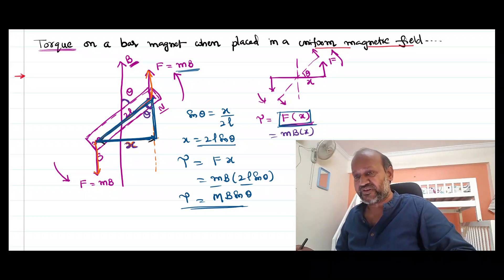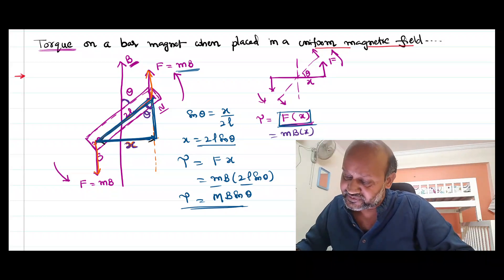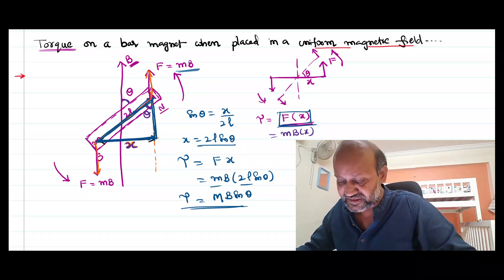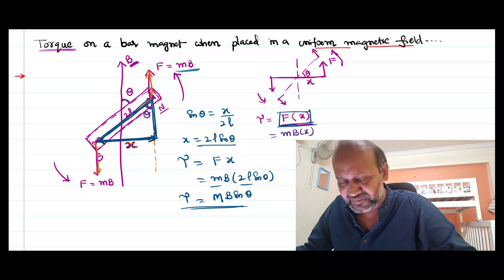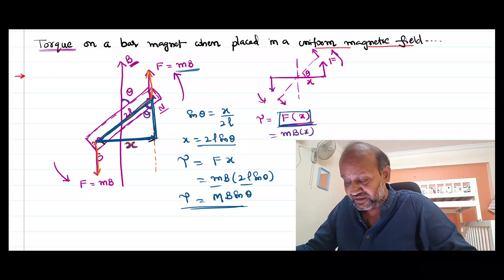So the expression for the torque experienced by the bar magnet is τ = MB sin theta. That's the simple expression — that's how we derive an expression for torque.